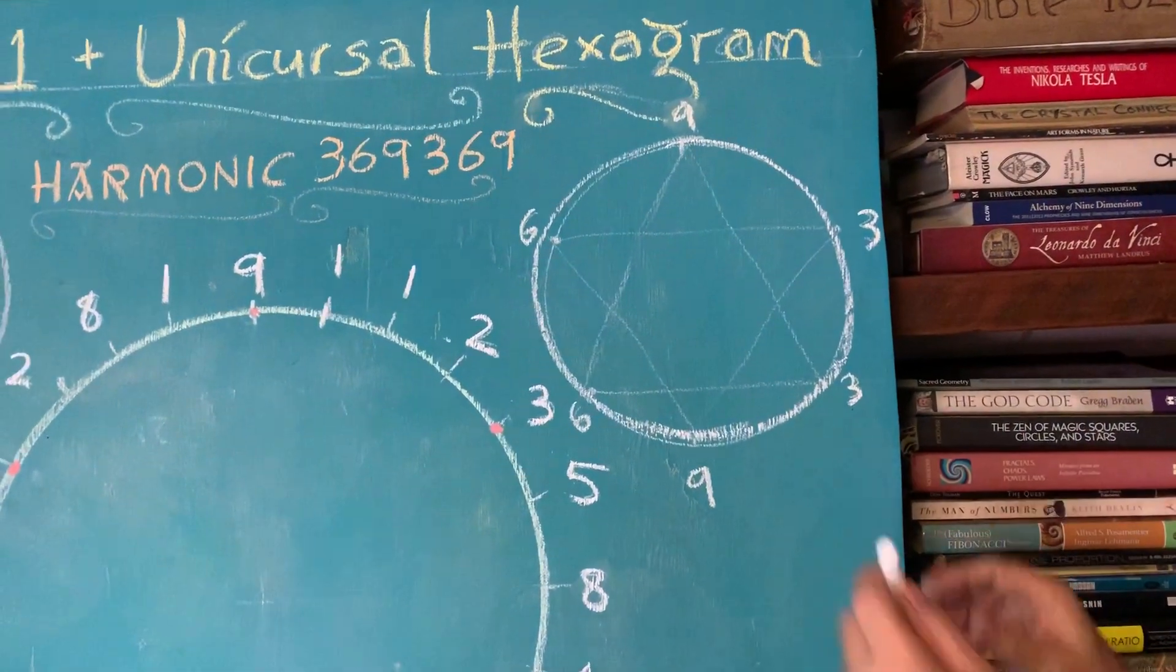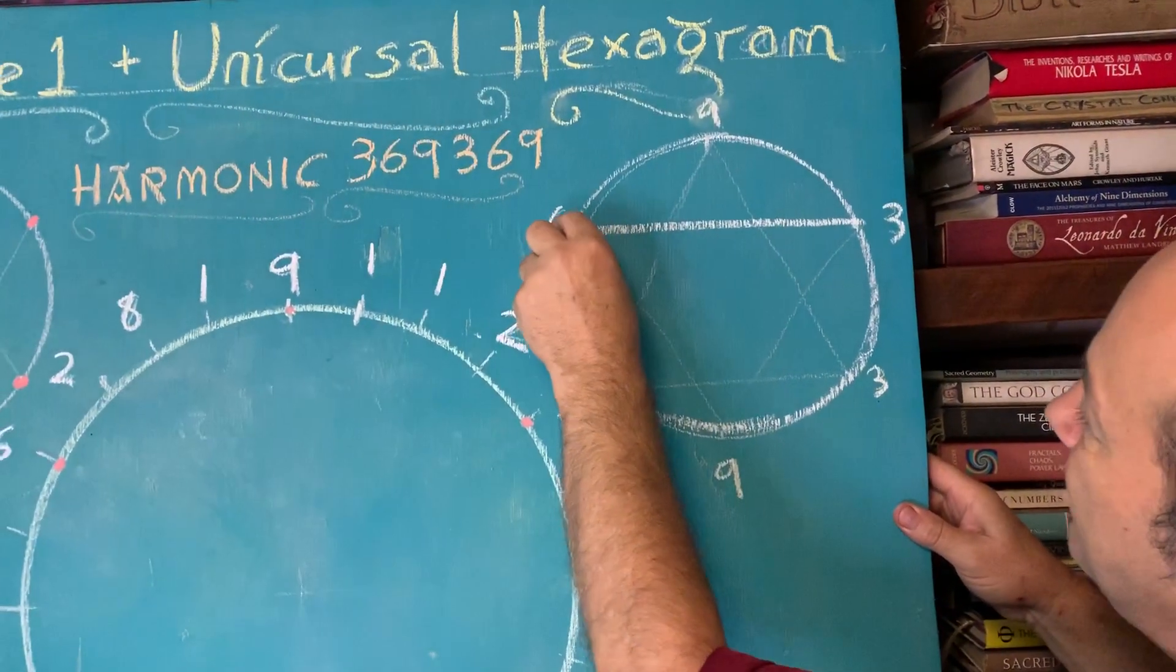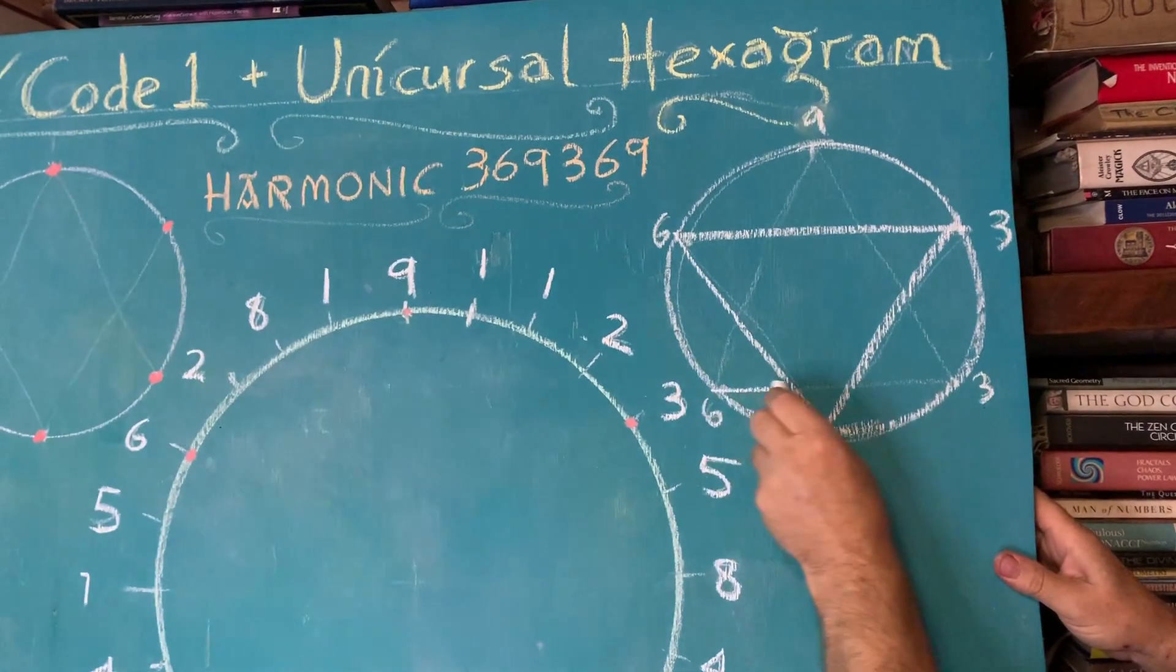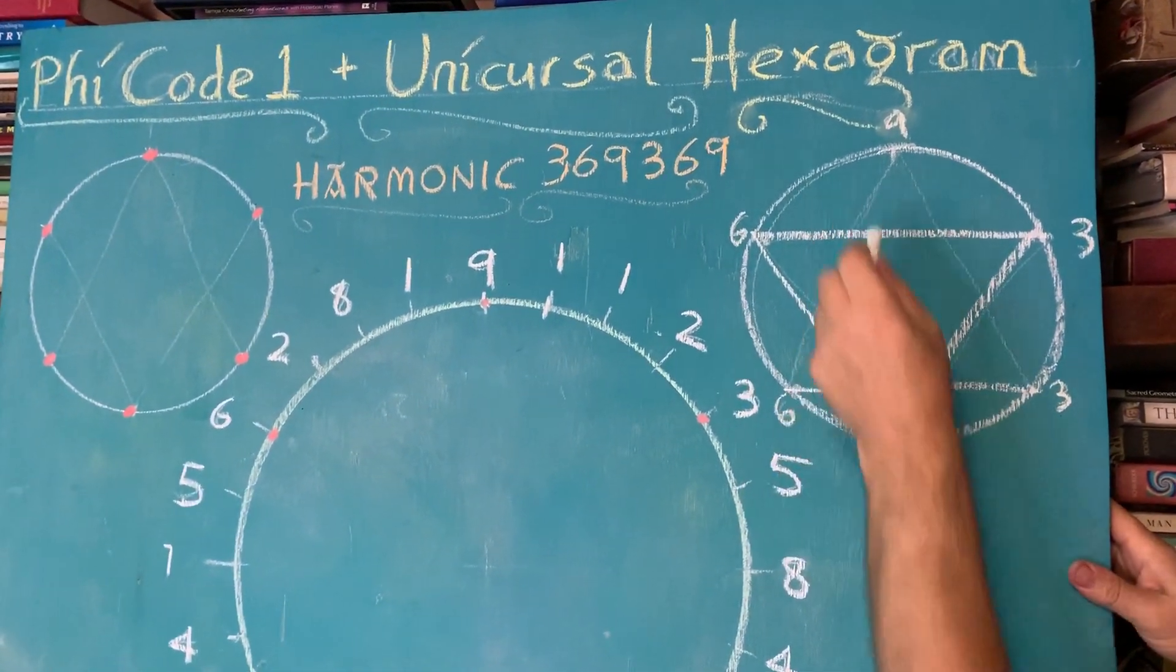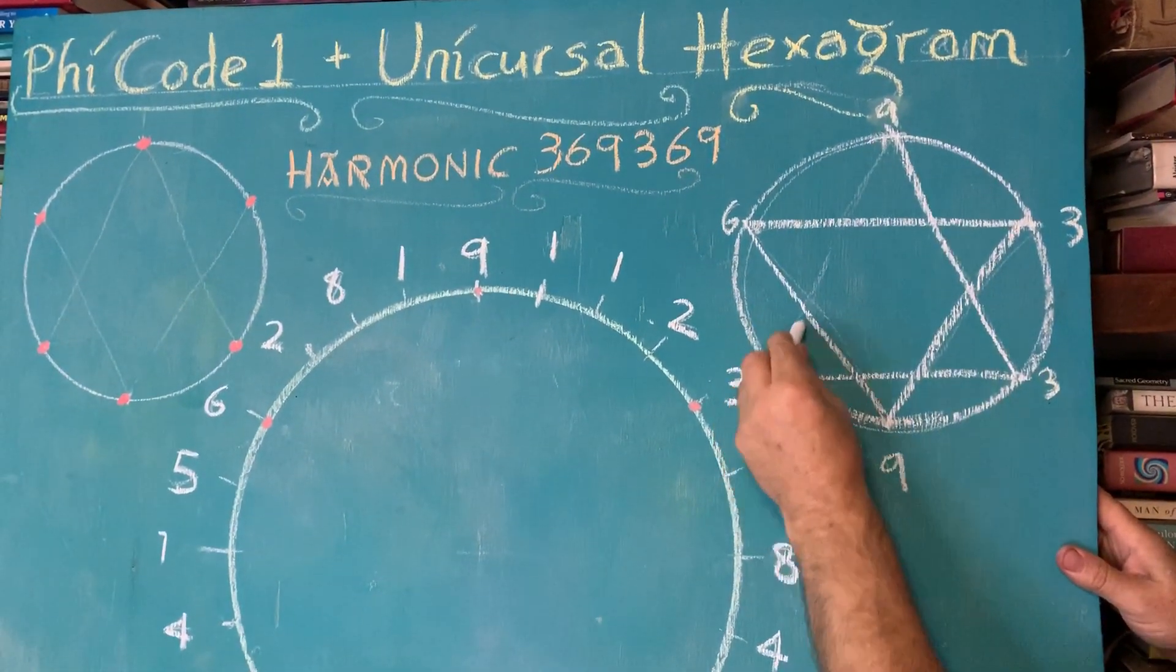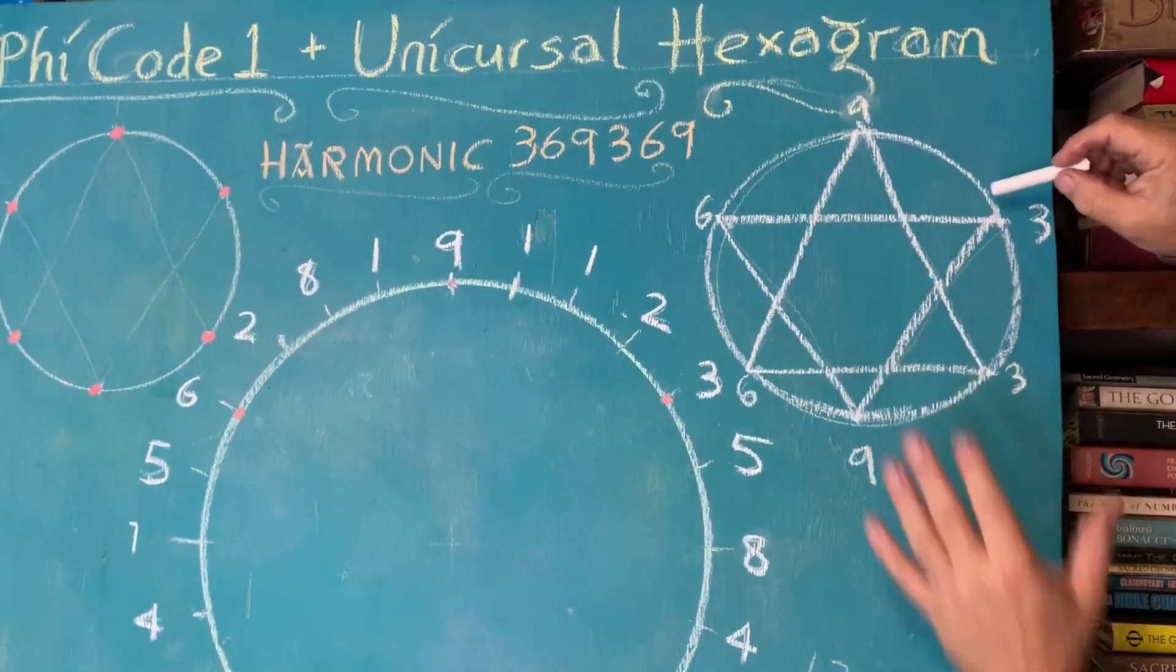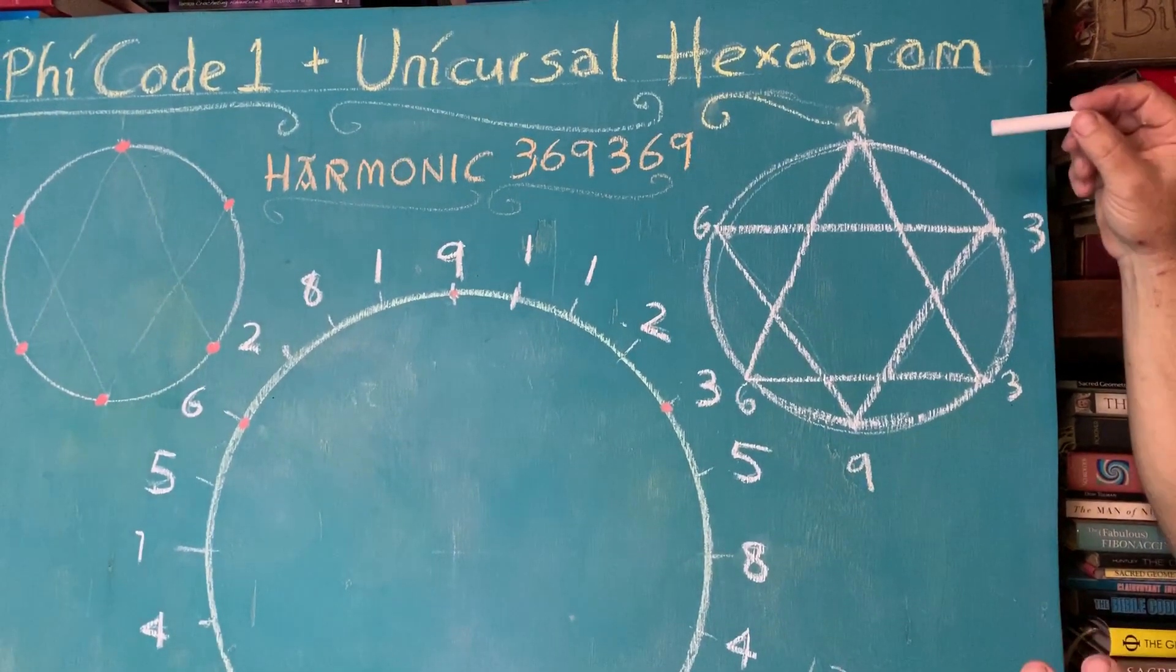The way the previous scholars have joined it is they've connected 3, 6 and 9 like this - there's a 3, 6, 9, a triangle. And then they said, oh look, there's another 3, 6 and 9 up here. They connected it like that. And that doesn't really make much sense to me because I find that this star of David pattern is composed of two fragmented triangles.